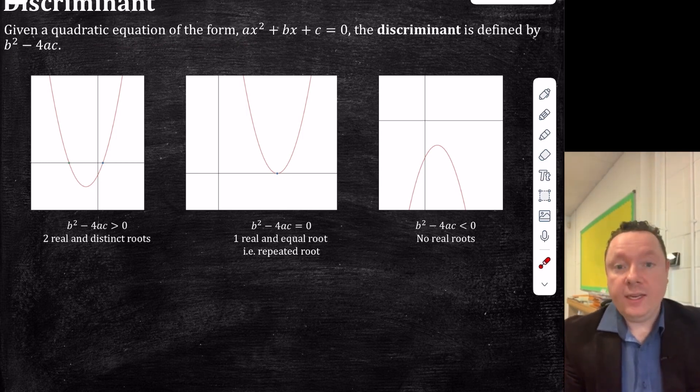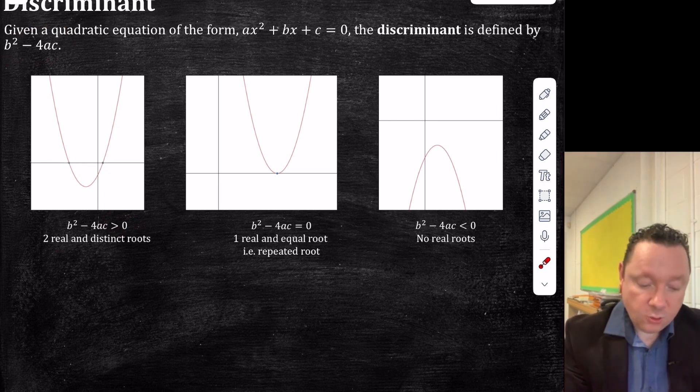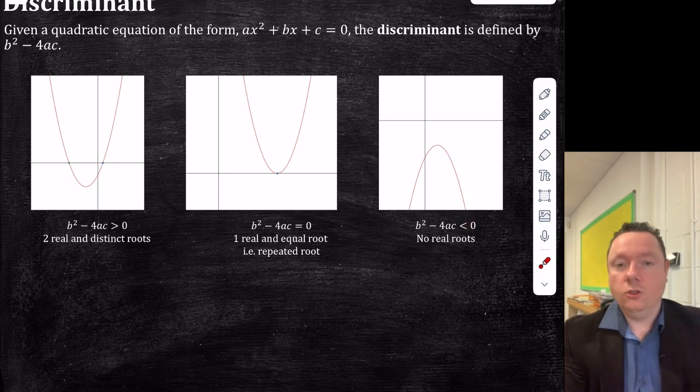And there's three things that can happen. If b squared minus 4ac is bigger than zero, you get two real and distinct roots. Roots are where we cut the x-axis. If b squared minus 4ac is equal to zero, you get one real and equal root. So in other words, a repeated root, or sometimes you can say two real and equal roots. And if it's less than zero, we can say there's no real roots.